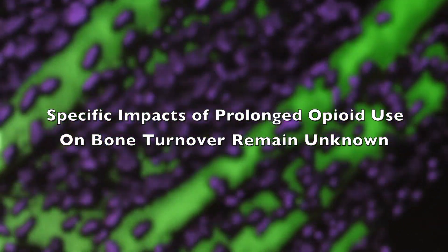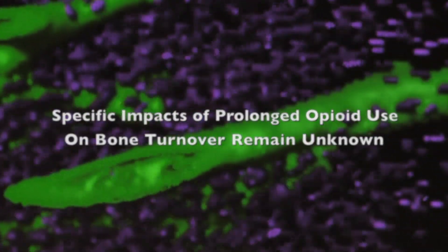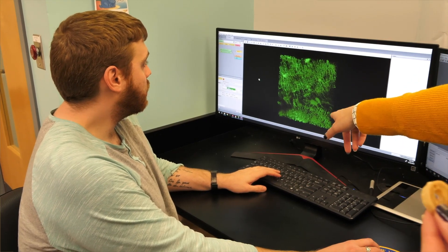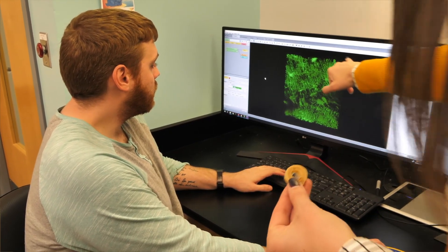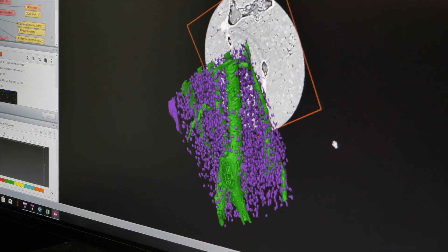A large proportion of the cases we see in forensic contexts are unfortunately marginalized individuals who often have substance abuse issues. One of the biggest issues with our methods is that we don't know how underlying biological processes affect those microstructural features.